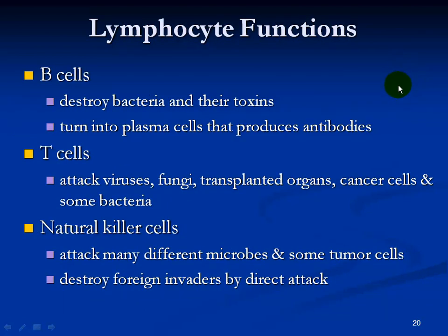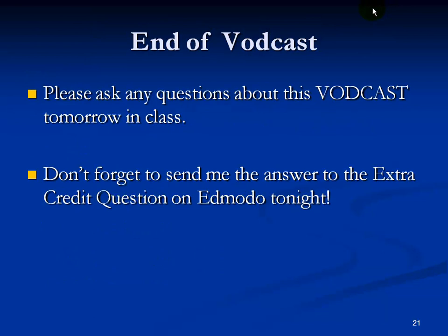Lymphocyte functions: B cells destroy bacteria and their toxins, and turn into plasma cells which produce antibodies. T cells attack viruses directly, fungi, transplanted organs, cancer cells, and some bacteria — and these are the ones that sometimes attack your own cells, such as those in the pancreas that cause type 1 diabetes. The third kind of lymphocyte is natural killer cells, which attack many different microbes and some tumor cells, destroying foreign invaders by direct attack. These are also sometimes involved in the destruction of beta cells in the pancreas.